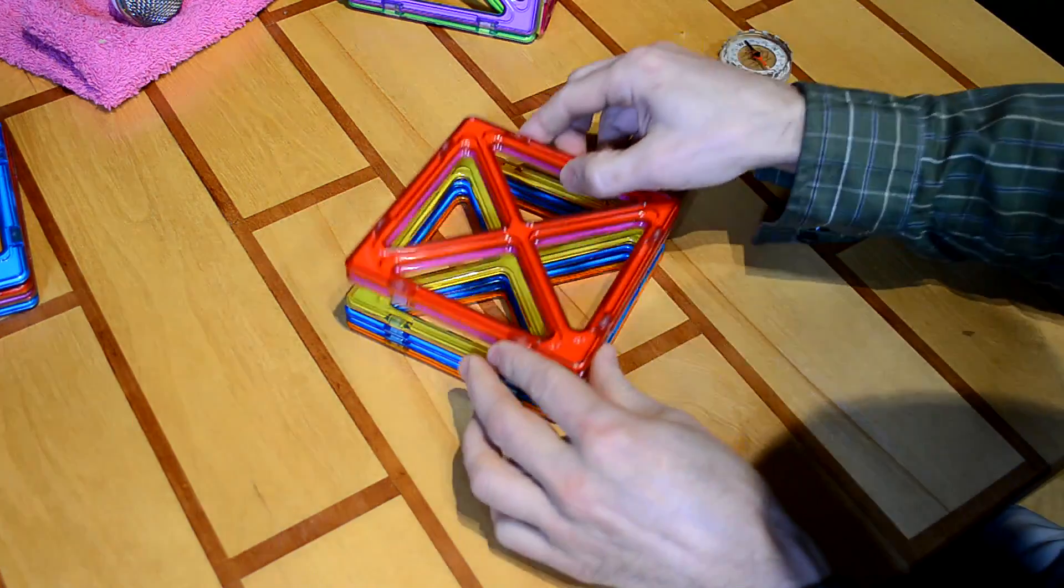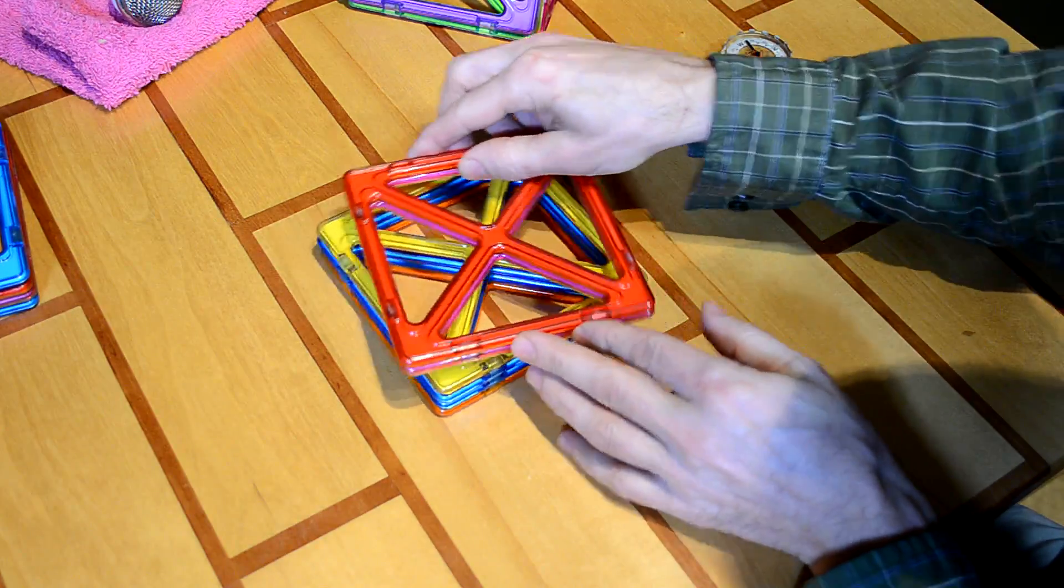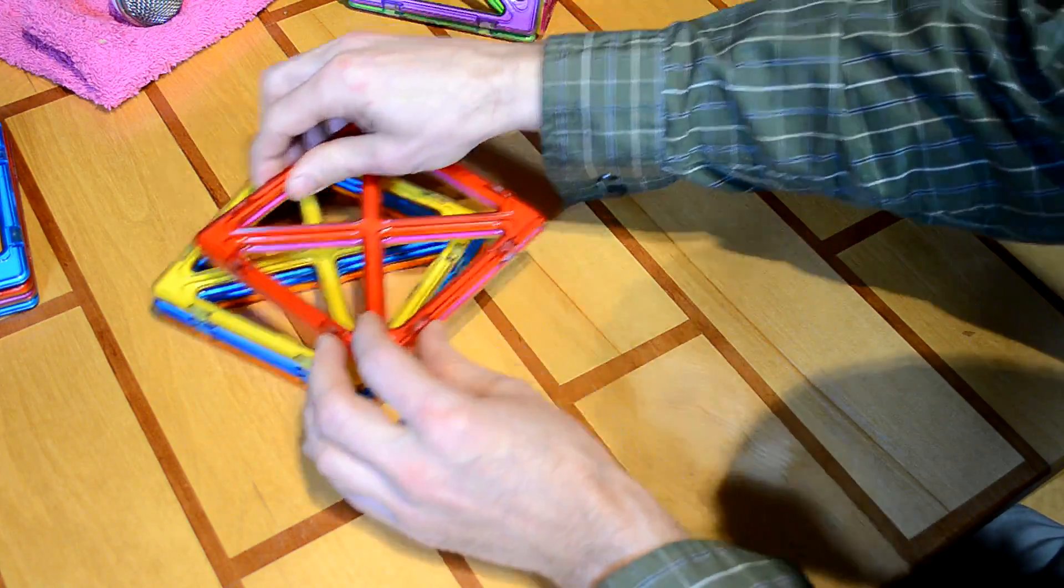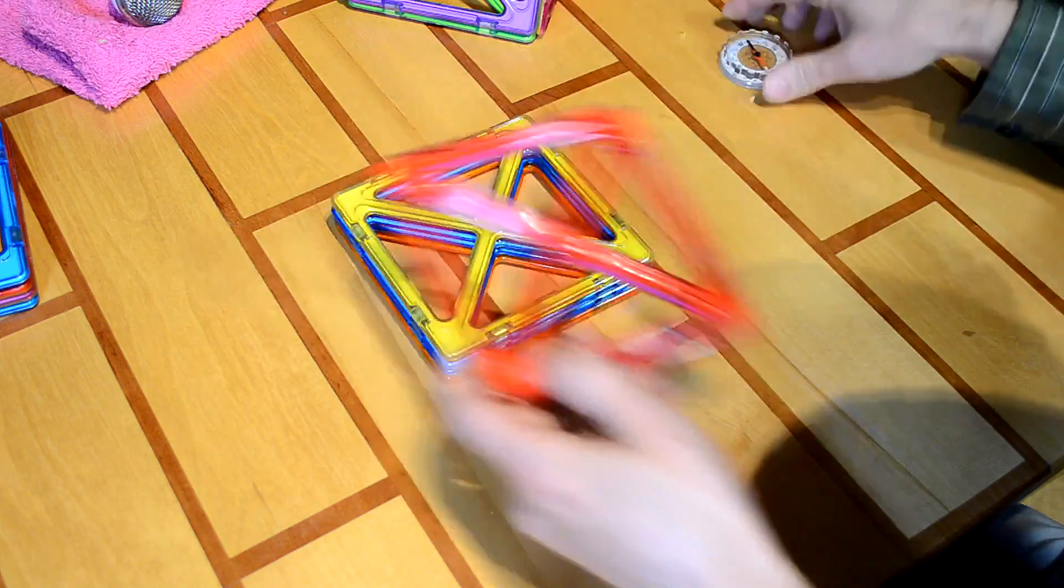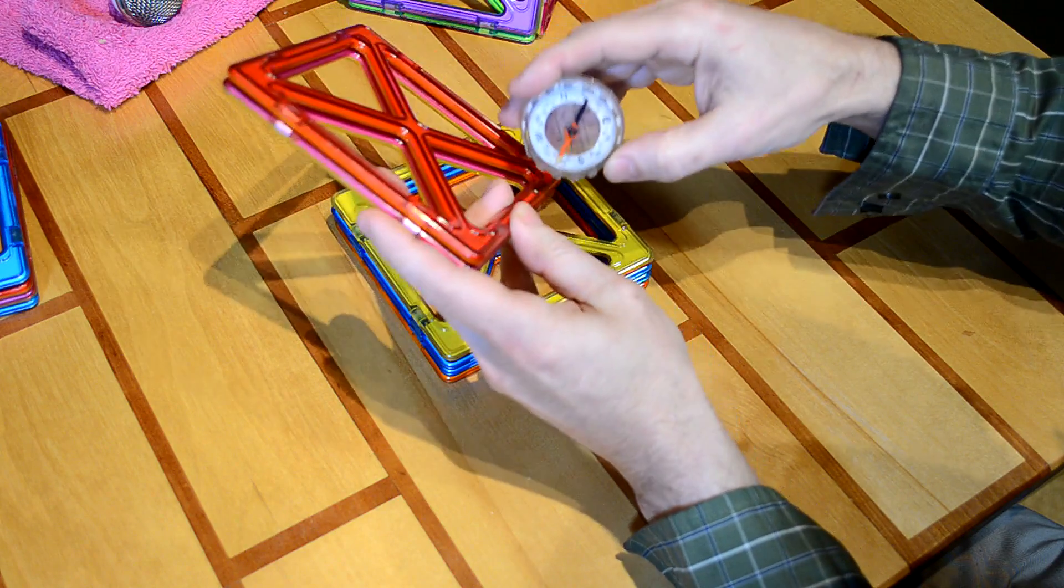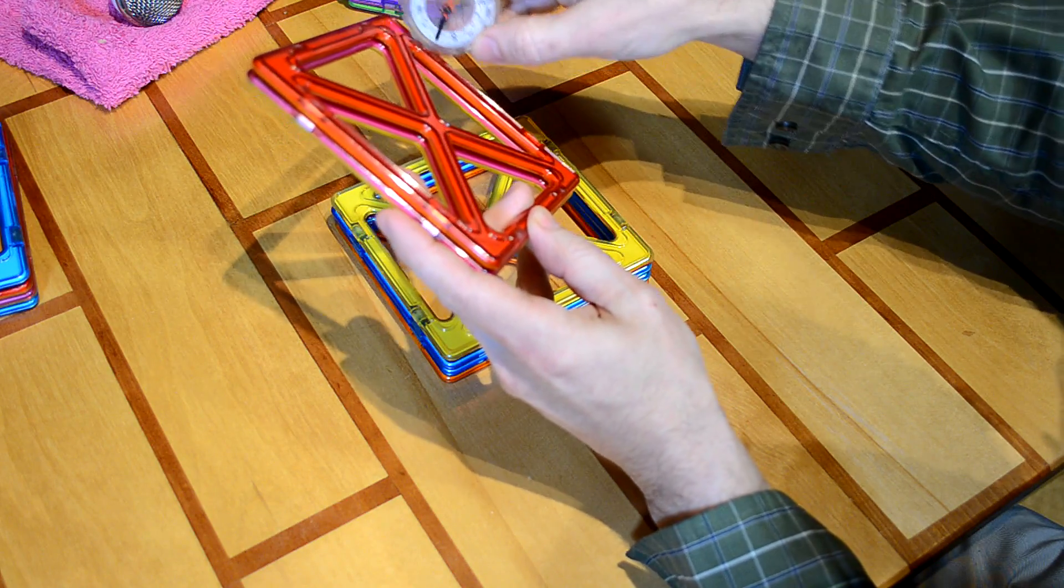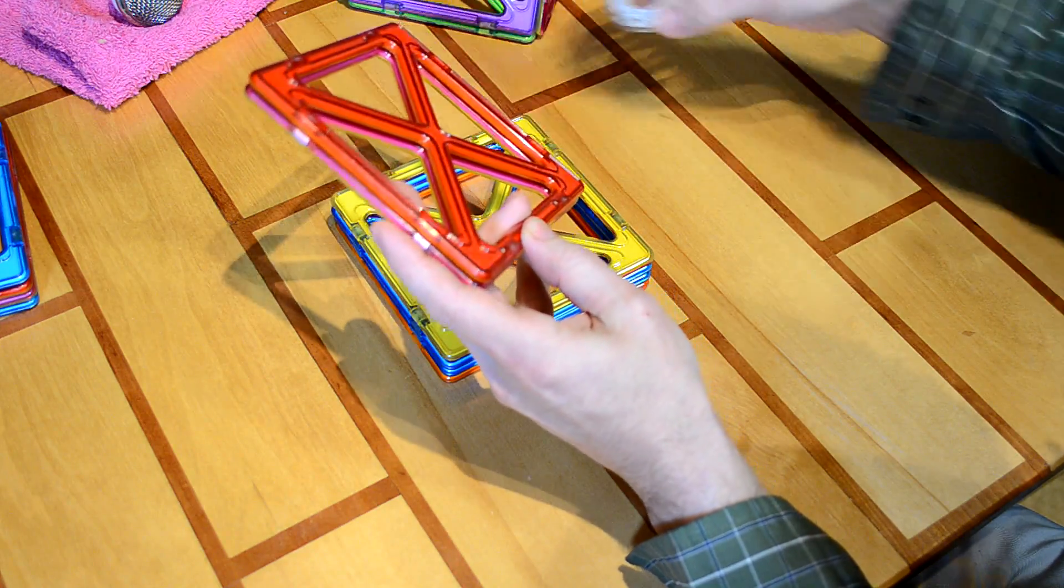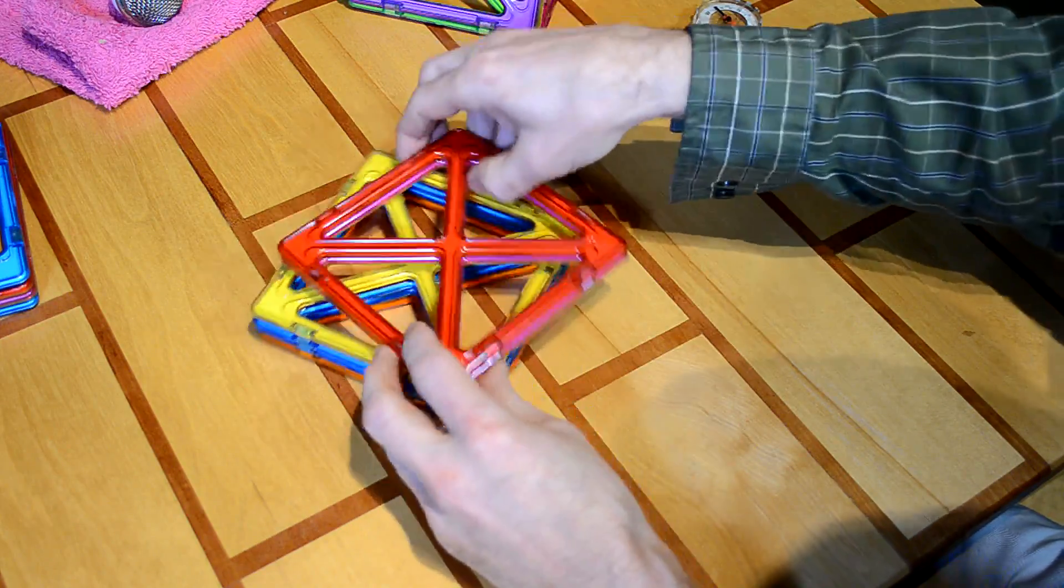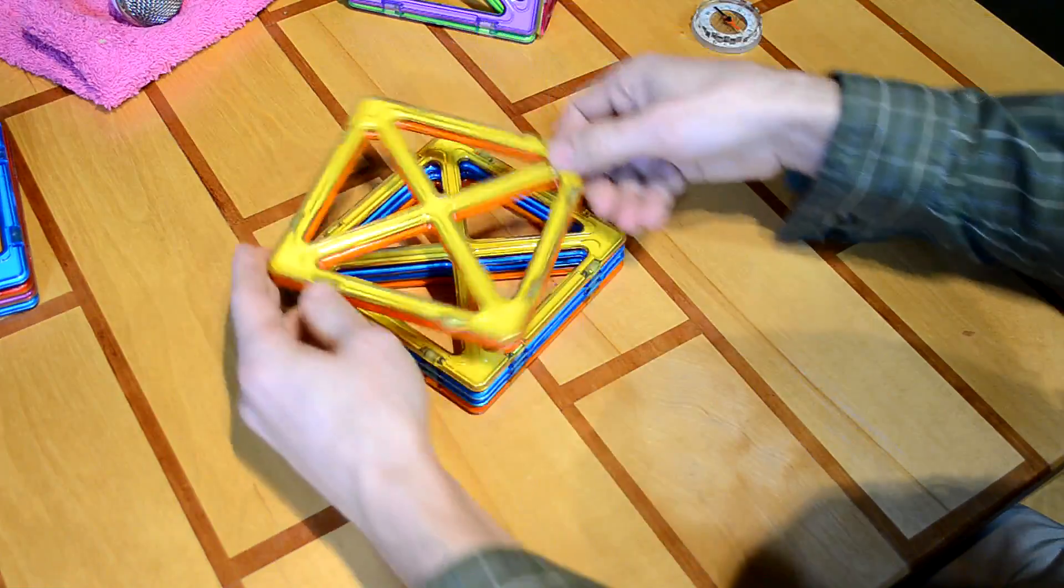But, if you put two on at a time, for instance, right now, these repel, because I've actually manipulated these to all be oriented the same way. It just won't go on at all, because I have the north-south of these. These are actually all oriented north-south, north-south, north-south. But, these two are opposite from these ones, which means there's no way that this fits on there. Any orientation doesn't work.